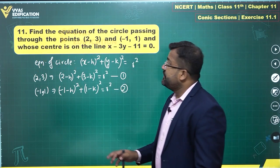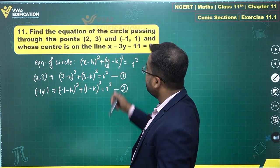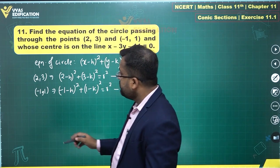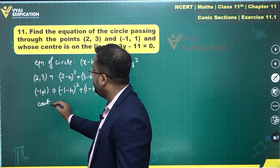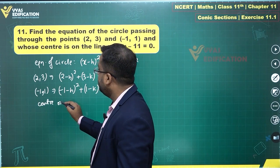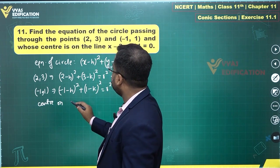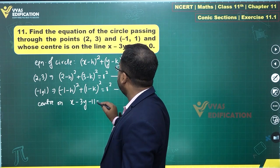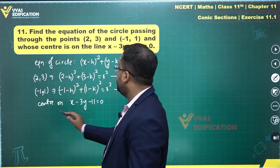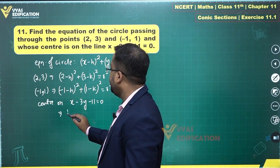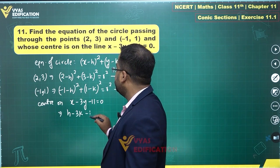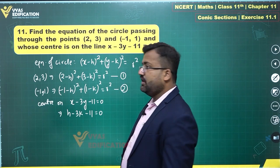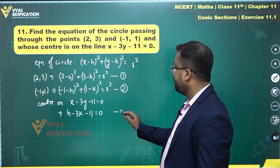Another equation is obtained by applying the condition that the center lies on the line. Center on x minus 3y minus 11 equals 0 tells me that h minus 3k minus 11 will be equal to 0. This is equation number 3.